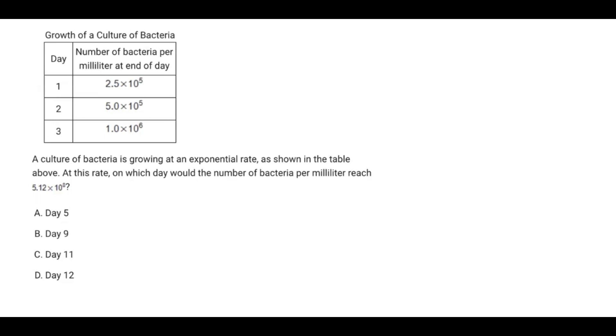All right, so the first thing I want to do is just find the factor or the scale. It's known as the common ratio, and since it is growing at an exponential rate, we know it's a geometric sequence. So from 2.5 times 10 to the power of 5 to 5.0 times 10 to the power of 5, that's going to be a scale factor of 2.